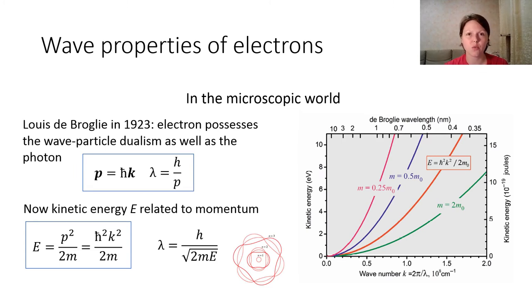Based on this, we also can calculate the kinetic energy of the electron that is related to the momentum and so it is related with the wavelength. Here you can see the dependence of the kinetic energy on the wave number and the de Broglie wavelength of different particles with different masses. Here you can see M0 is the mass of the electron.